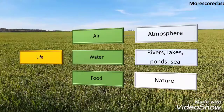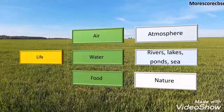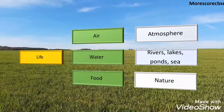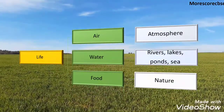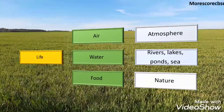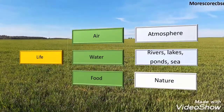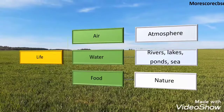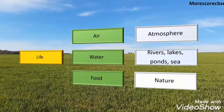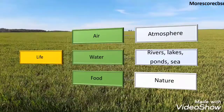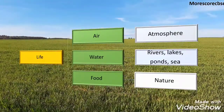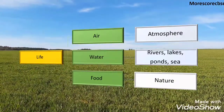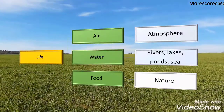The second major characteristic is that living things need air and water. Living things take in oxygen from the atmosphere. Water is the major proportion in all living things. Water is present around us in rivers, lakes, ponds, and the sea. Living things get food from nature, and food is converted into nutrients that give energy to the body.